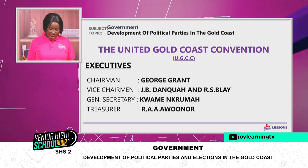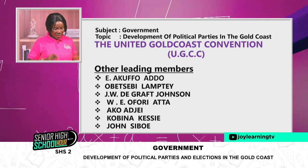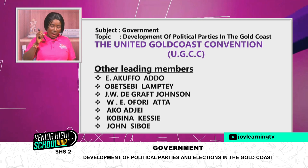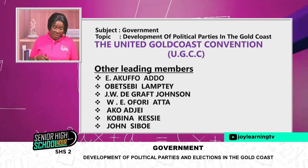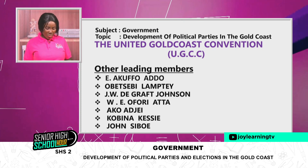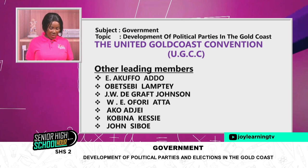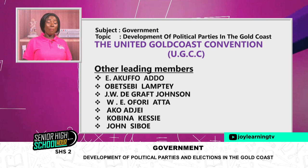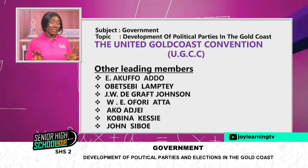The treasurer was R.A.A. Awoonor. Other leading members included Obetsbi Lamptey, J.W.D. Crabbe Johnson, E.W.E. Ofori Atta, Akufo Jay, Kobina Kessie, and John Tsibo. These men were businessmen, lawyers, and teachers — what we call the educated elite. Paa Grant was a timber contractor, a rich man. They had become elite through wealth and education, and they put the United Gold Coast Convention together.